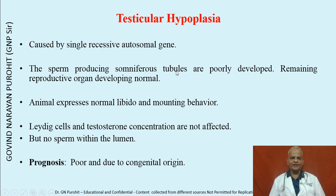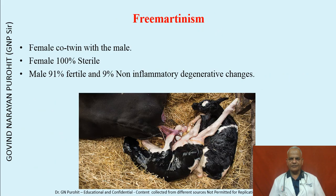Testicular hypoplasia is caused by a single recessive autosomal gene. The sperm-producing seminiferous tubules are poorly developed while remaining reproductive organs develop normally. The animal expresses normal libido and mounting behavior. The Leydig cells and testosterone concentration are not affected, but no sperm are present within the lumen. The prognosis is poor due to its congenital origin, and such bulls should not be used for breeding or artificial insemination.